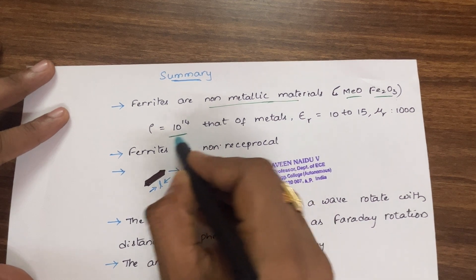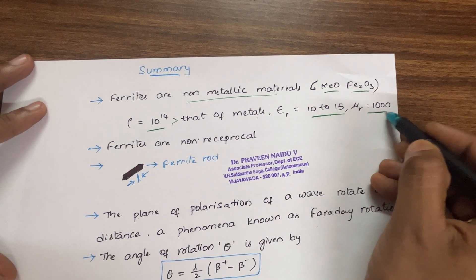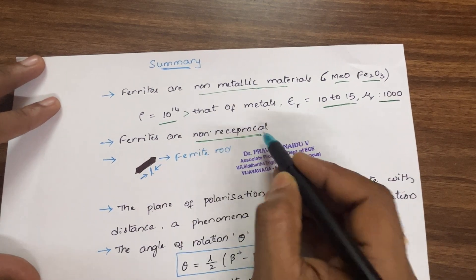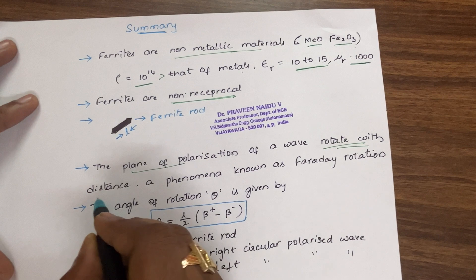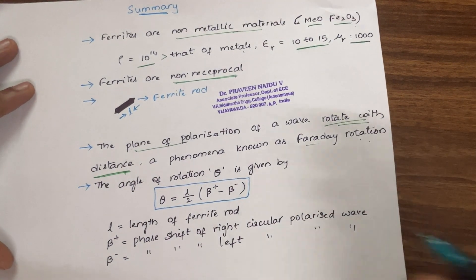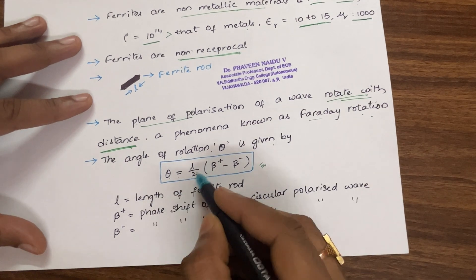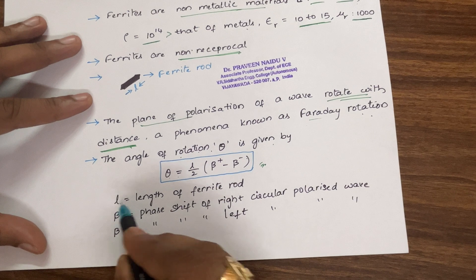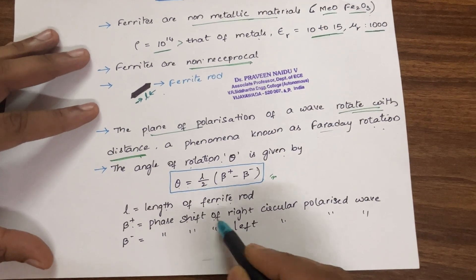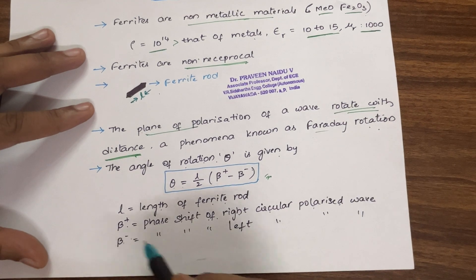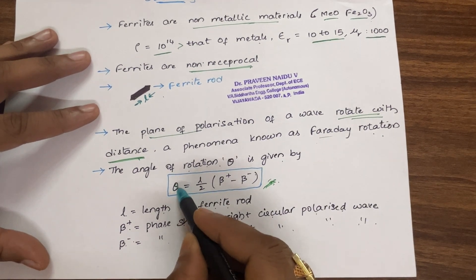The plane of polarization of a wave rotates with distance, which we call Faraday rotation. To find the angle of rotation theta, the formula is: theta = (l/2)(β⁺ − β⁻), where l is the length of the ferrite rod, β⁺ is the phase shift of the right circularly polarized wave, and β⁻ is the phase shift of the left circularly polarized wave.